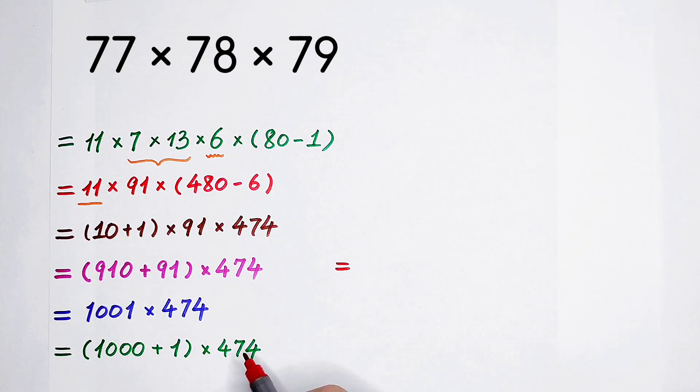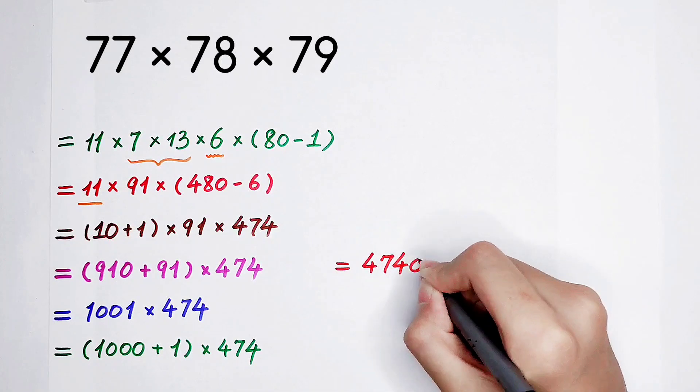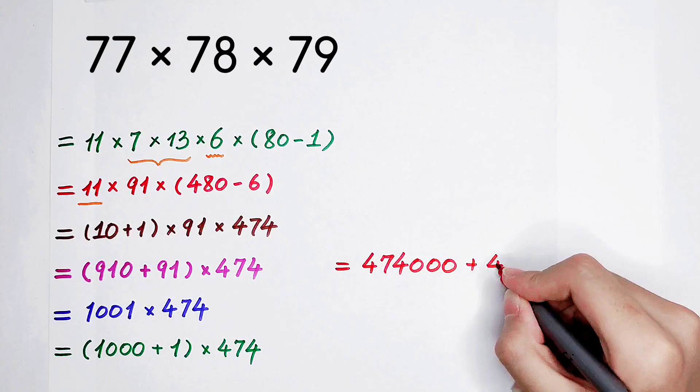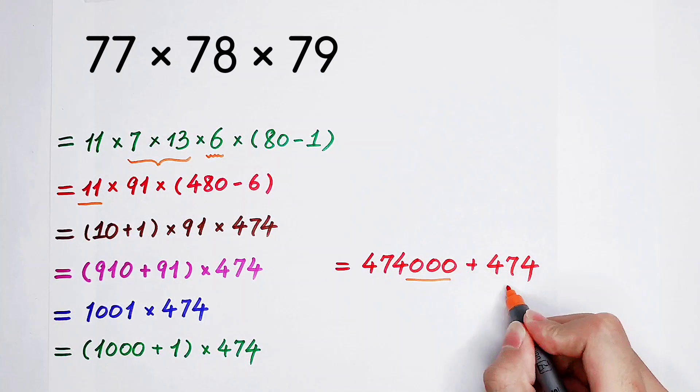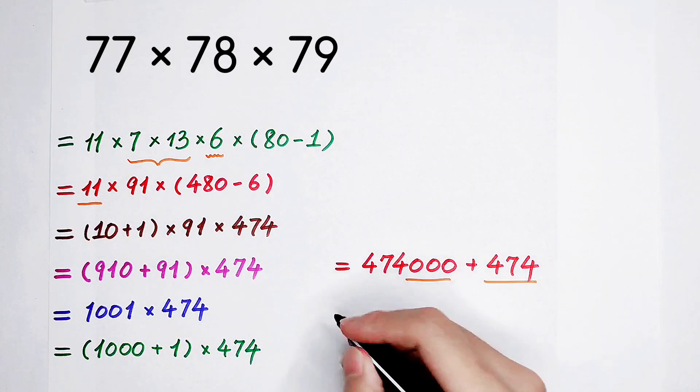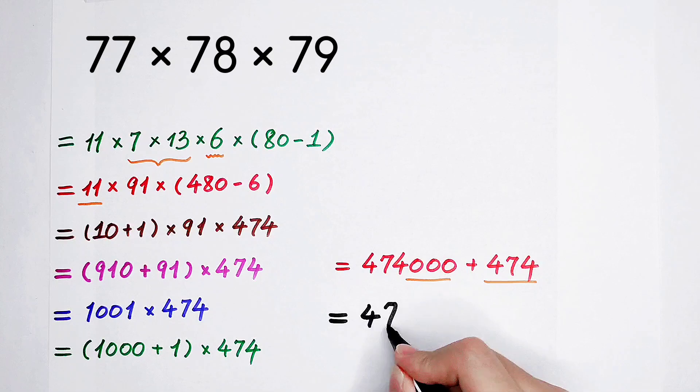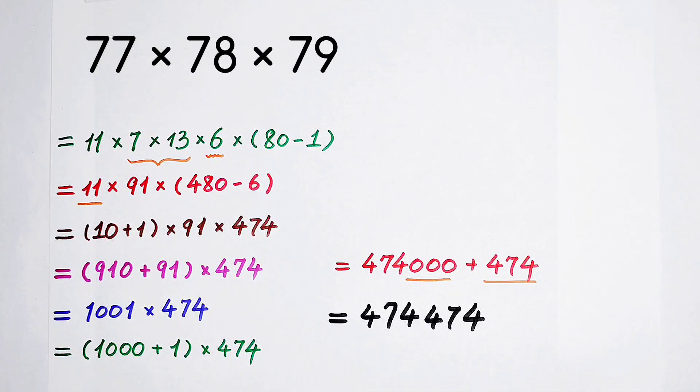1000 times 474, it is 474, and you just add three zeros. And then plus 1 times itself, it is itself. You see three zeros and three digits, and you can get the final answer. It is 474,474. Did you get it?